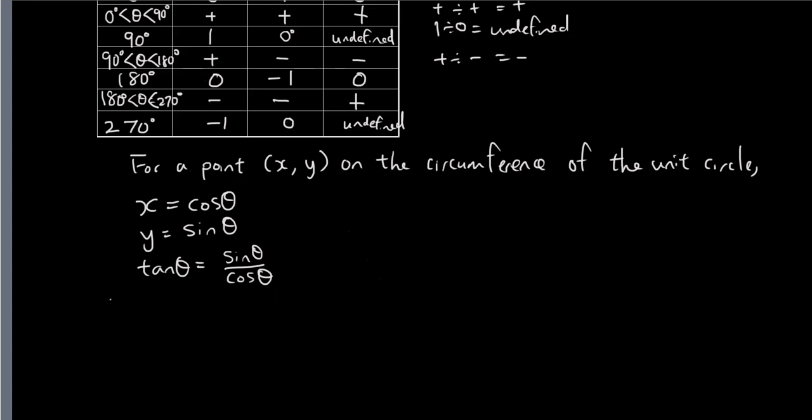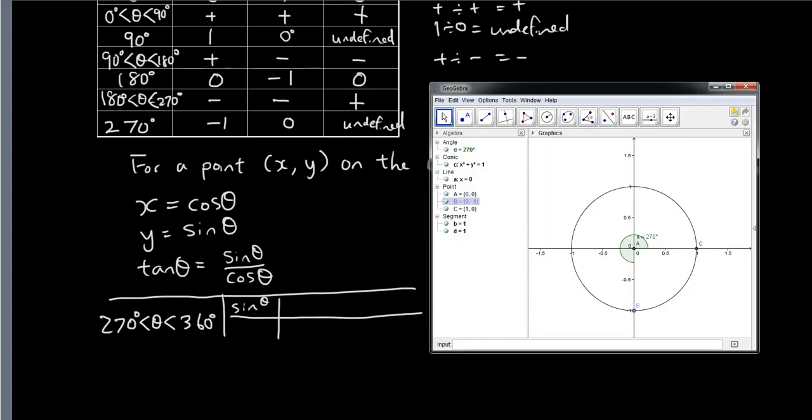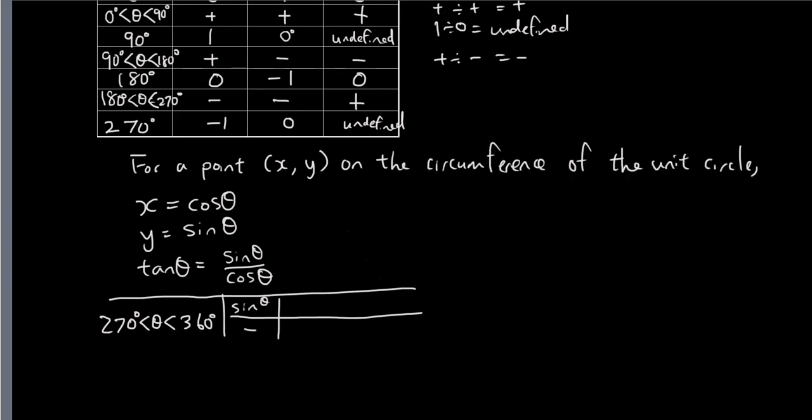We've run out of space, so I'm just going to put it down here. So we've got 270 degrees to 360 degrees. We have sine theta is negative, right? Vertically we're below the horizontal. And cosine theta is positive. So tangent theta: negative divided by positive is negative.